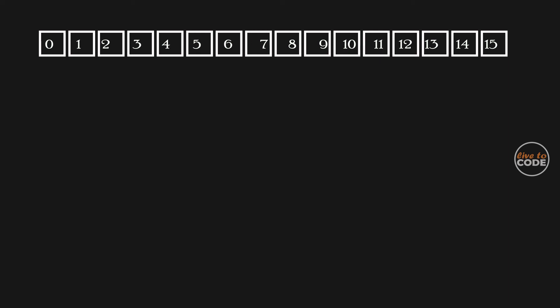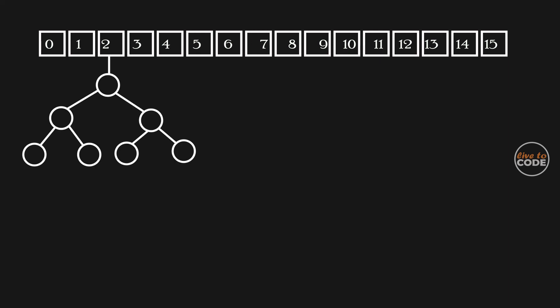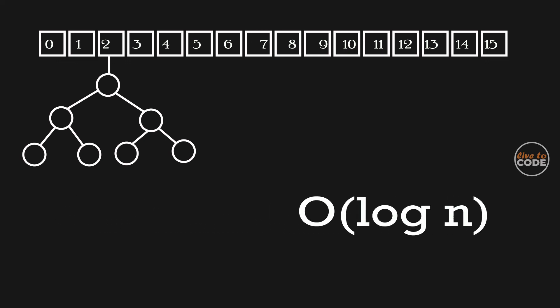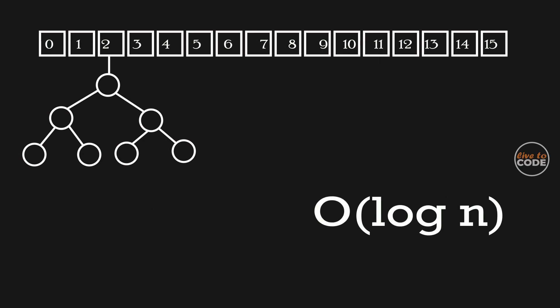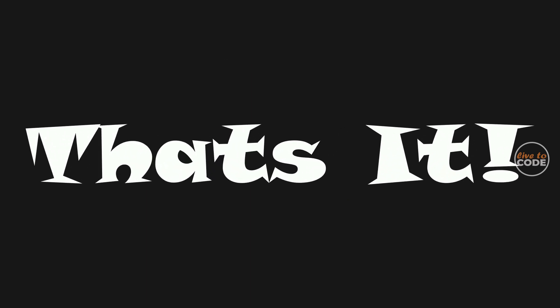In Java 8, they improved hash table storage slightly. They replaced the linked list with a balanced tree, so each index stores a balanced tree instead of a linked list. The time complexity has been improved from O(n) to O(log n). This is how HashMap works internally.